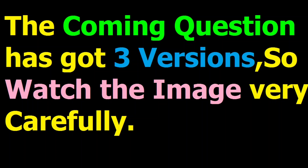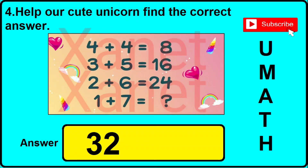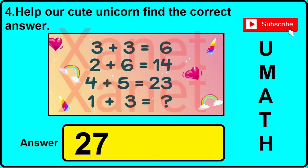Question number 4 also has got three different versions or types, so watch the image carefully and click the answer I will be showing here. In version 1: 4 plus 4 equals 8, 3 plus 5 equals 16, 2 plus 6 equals 24, then 1 plus 7 equals what — the correct answer is 32. In version 2: 3 plus 3 equals 6, 2 plus 6 equals 14, 4 plus 5 equals 23, then 1 plus 3 equals what — the correct answer is 27.